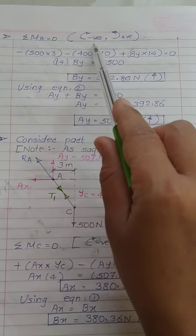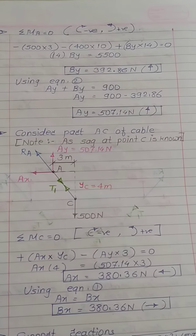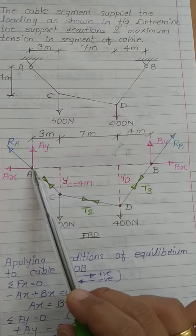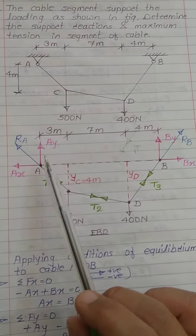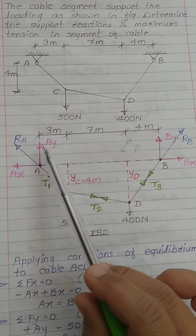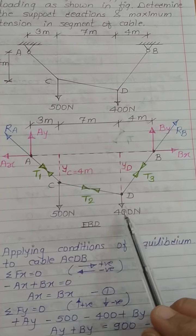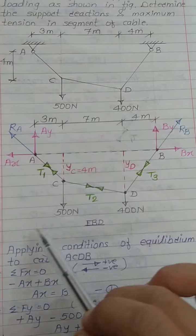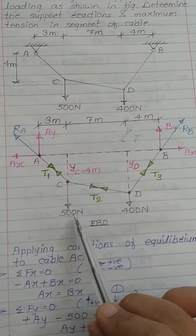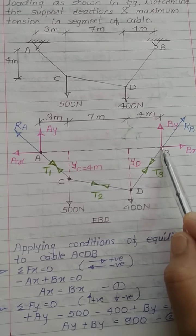Applying the third equilibrium condition ΣMa = 0, with clockwise moments negative and anti-clockwise moments positive. Taking moment about point A — since Ay, Ax, and Bx all pass through point A, their moments are zero and can be neglected. The 500 N and 400 N forces rotate clockwise about A (negative), and By rotates anti-clockwise (positive).